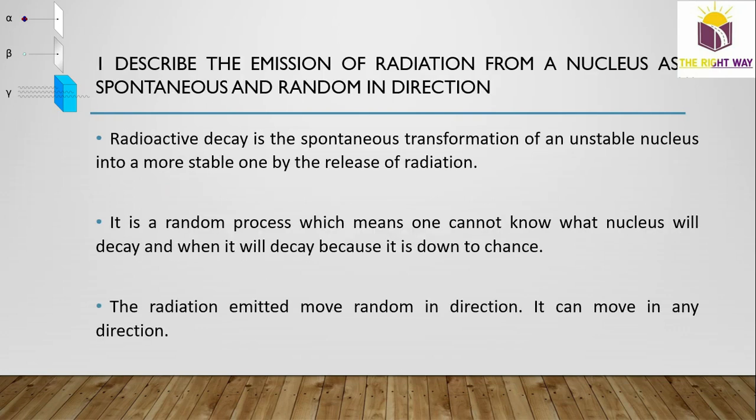First, let's discuss the emission of alpha radiation. Radioactive decay is spontaneous, meaning it happens on its own. Non-spontaneous decay occurs when an unstable nucleus is hit by a particle — for example, when uranium is hit by a neutron, as we discussed in nuclear fission, it emits radiation as it breaks down.